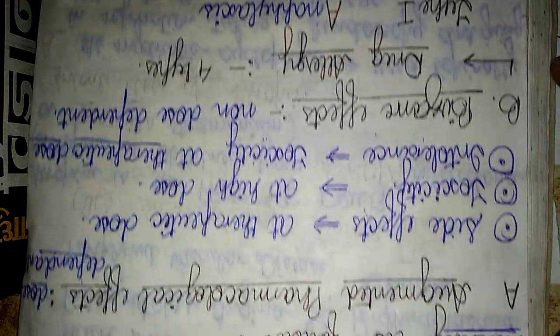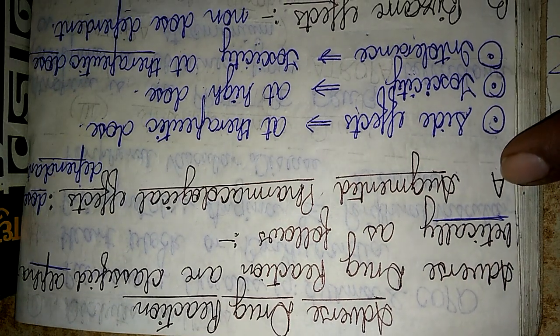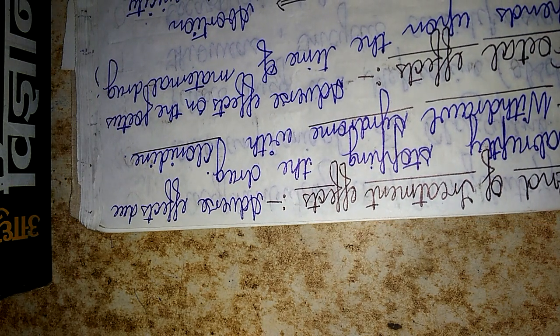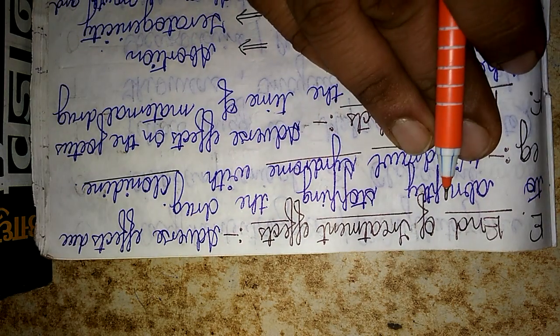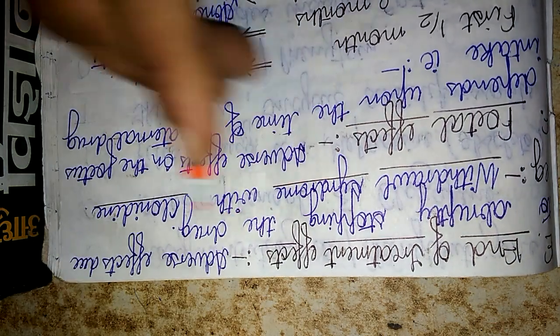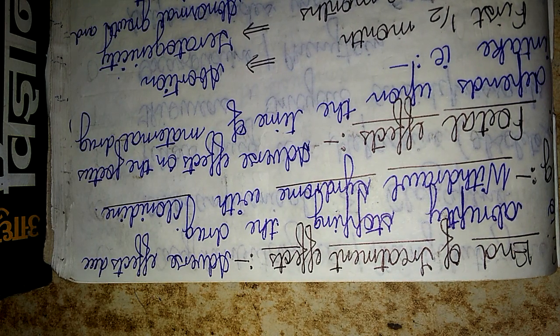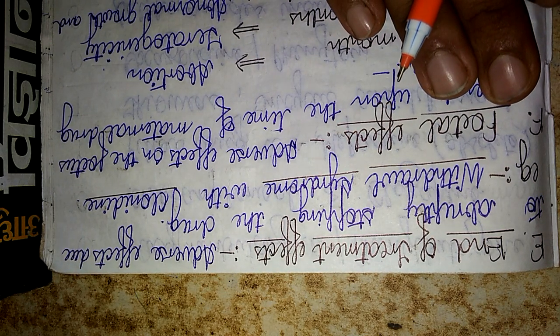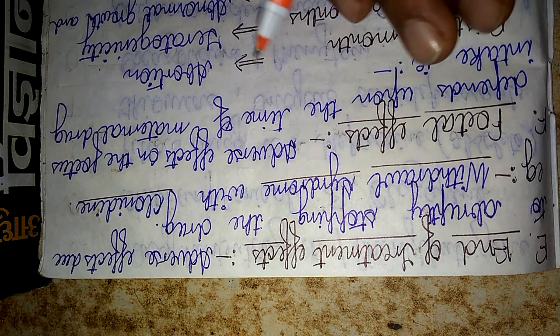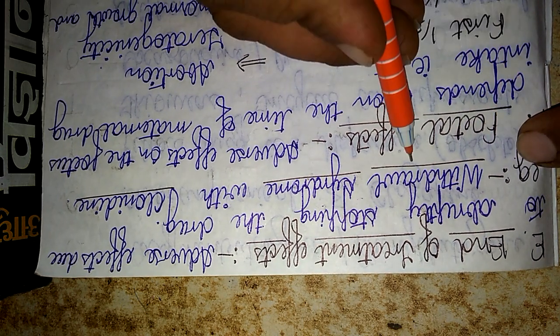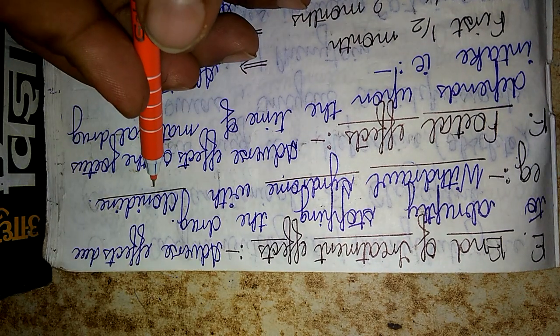The next alphabet — 'E' — refers to end of treatment effects. These are adverse effects due to abruptly stopping a drug. End of treatment effects are manifested when we suddenly or abruptly stop a drug. A very famous example for this category is the withdrawal syndrome seen with clonidine.